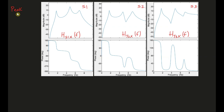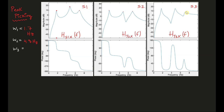On top I have the amplitude plots and on the bottom the phase plots. The first thing I can do by looking at these plots is peak picking — I look at my peaks to find what my eigenvalues look like: ω1, ω2, and ω3. The first natural frequency is approximately 1.7 Hz, the second is about 4.8–4.9 Hz, and the last is around 6.9 Hz. This is an approximation; other methods can be more accurate.